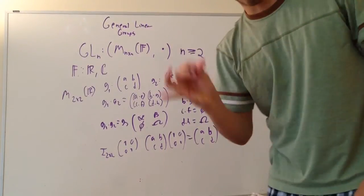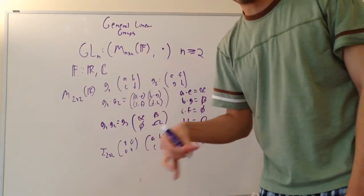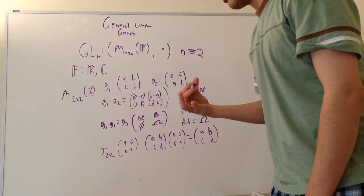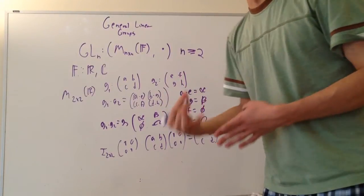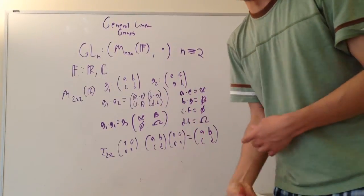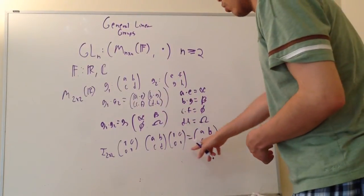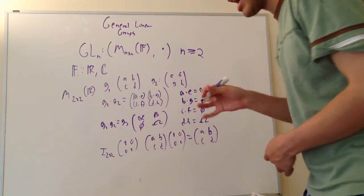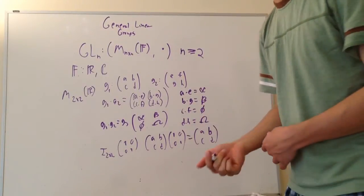And because all matrices in this group are invertible, we know that there exists an inverse for every single matrix that gives back the identity. That is why this forms a group.